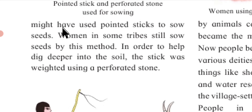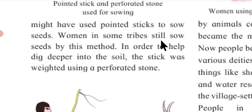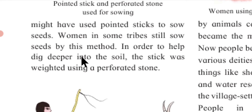Women are credited to have started cultivation. They might have used pointed sticks to sow seeds. Women in some tribes still sow seeds by this method. In order to help dig deeper into the soil, the stick was weighted using a perforated stone.